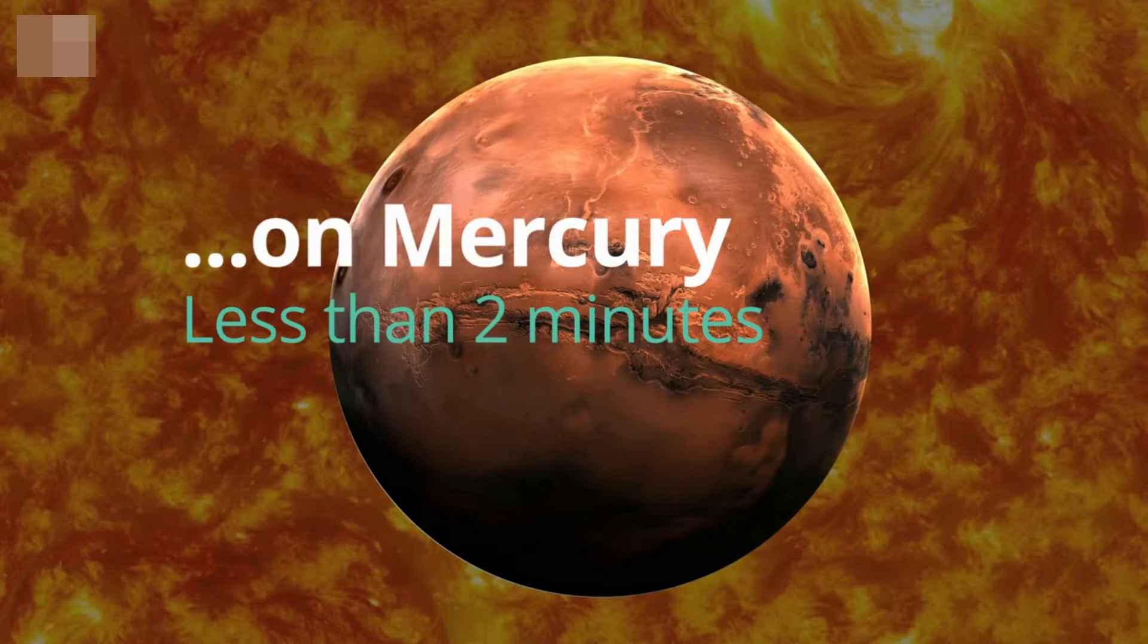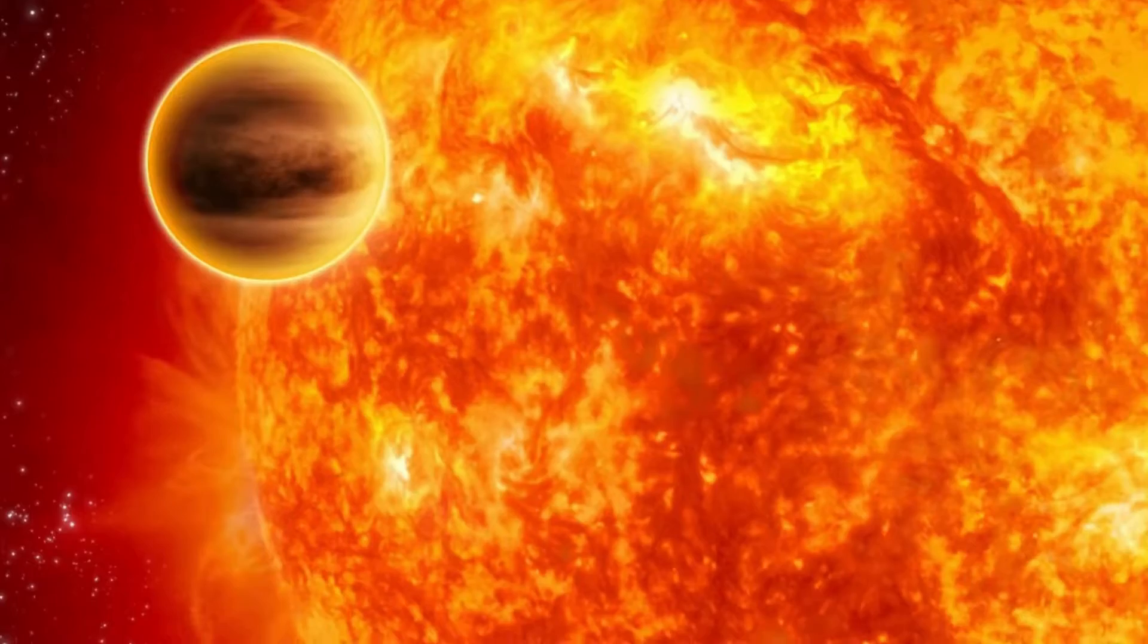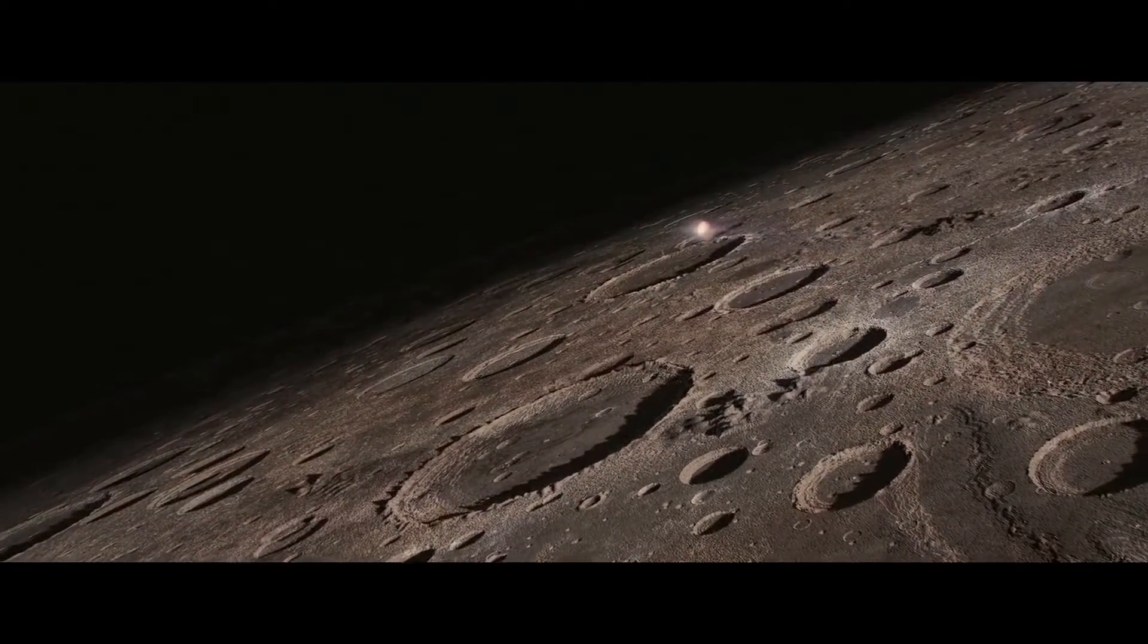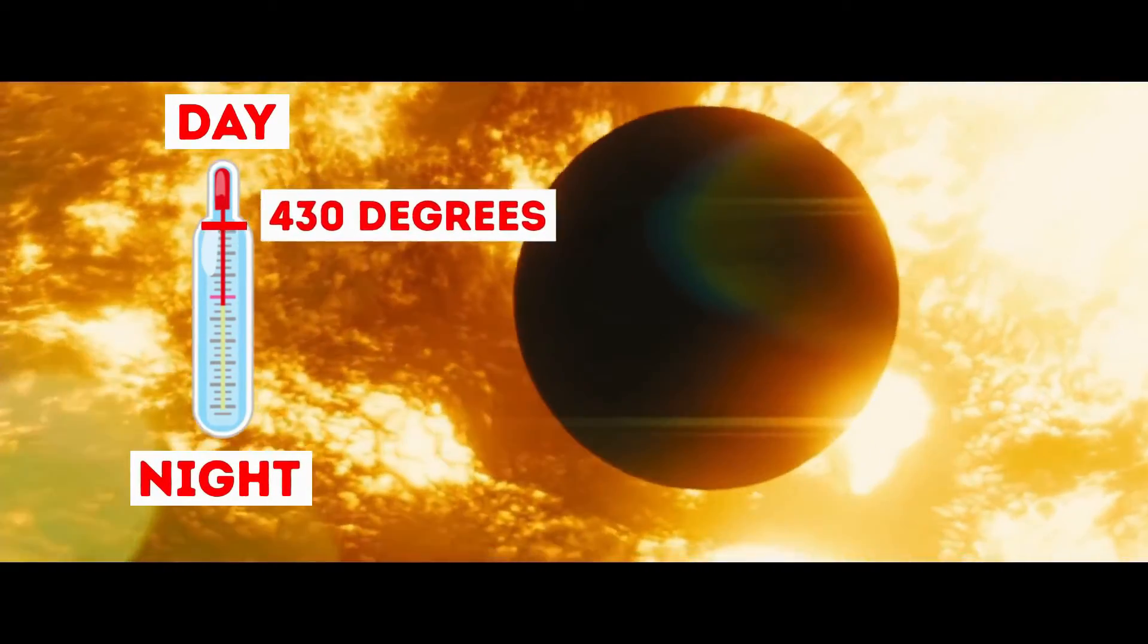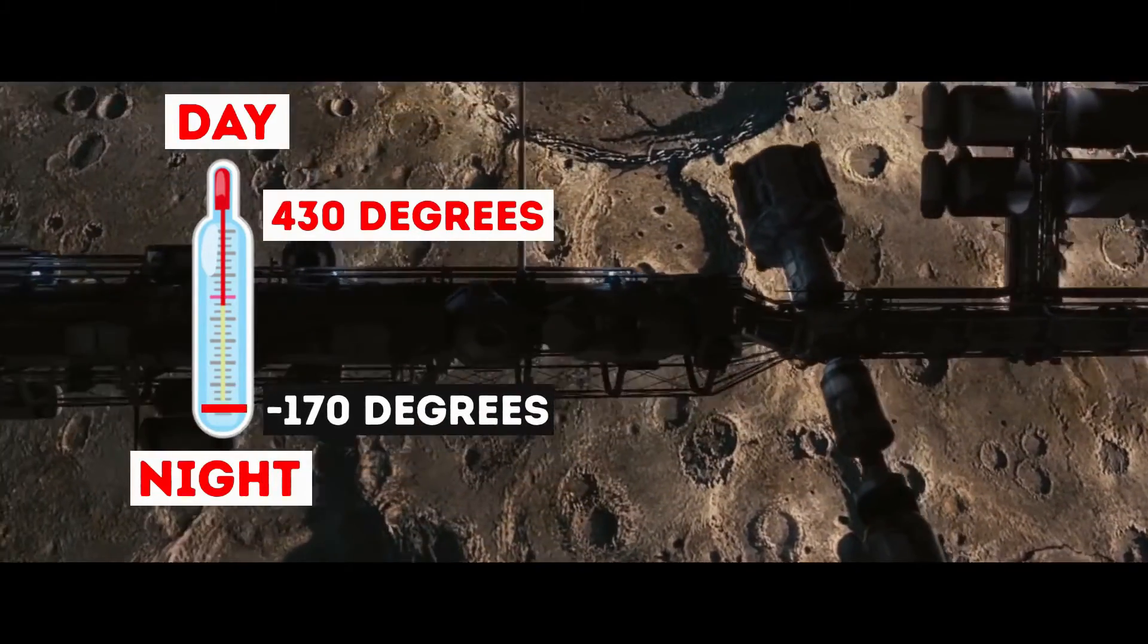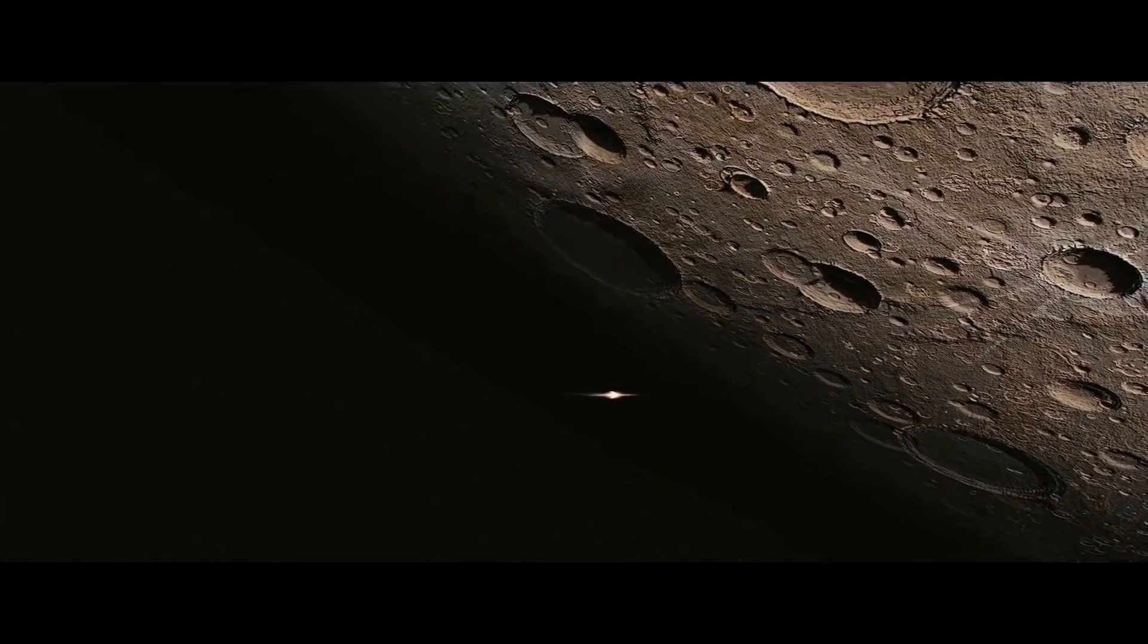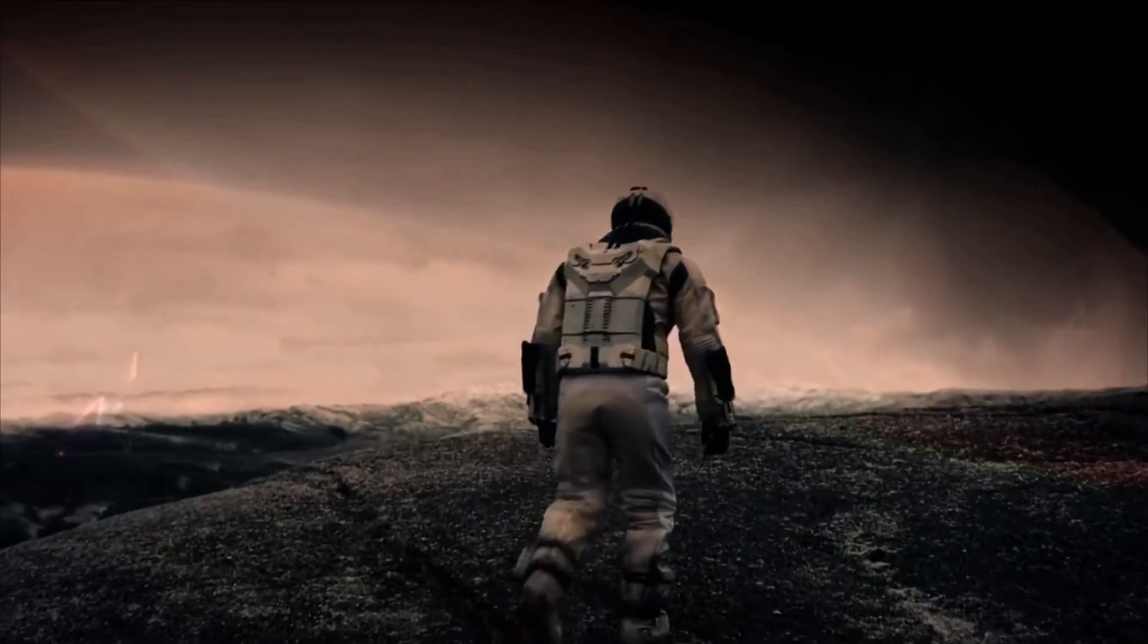Mercury: less than 2 minutes. The side that faces the sun is extremely hot. Conversely, the opposite side is freezing. The temperature goes up to 430 degrees Celsius and drops to minus 170 degrees Celsius. If you could straddle the line between the two temperatures and rotate between them, then just maybe you could survive as long as you could hold your breath.